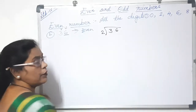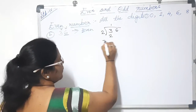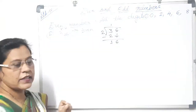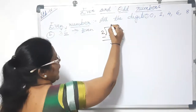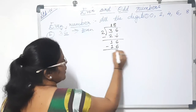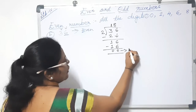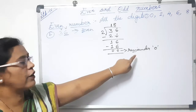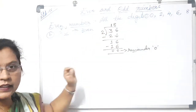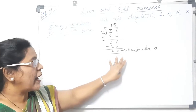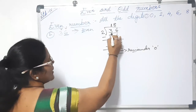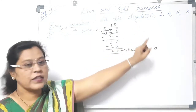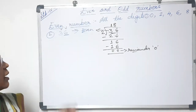Let's verify: 36 divided by 2. 2 goes into 3 once with remainder 1, bring down the 6 to get 16. 2 times 8 is 16, so the remainder is 0. This confirms the second rule of even numbers: after dividing the given number by 2, if the remainder is 0, then the number is called an even number.